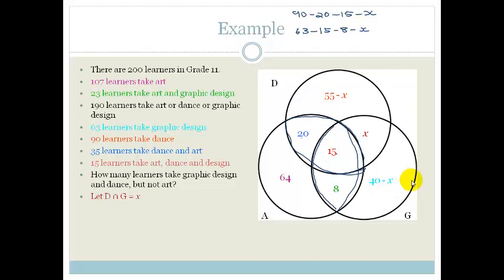Now, let's go check if we've used up all our information. Do you see we've still got two more bits of information? So the next bit of information we've got is that 190 learners take art or dance or graphic design. Therefore, all these circles have to add up to 190. But there are 200 learners in grade 11. So therefore, we know that there are 10 kids that are outside these sets, but they are in the sample space. They don't take design or art or graphic design.